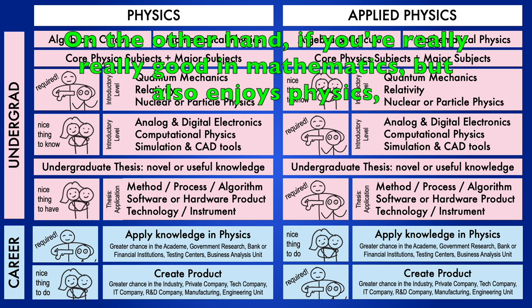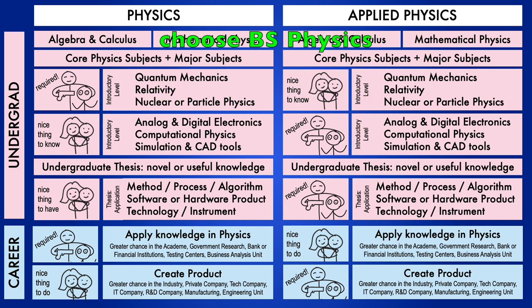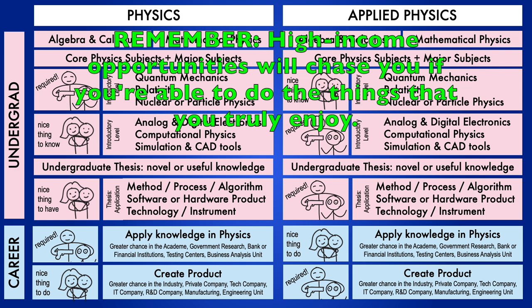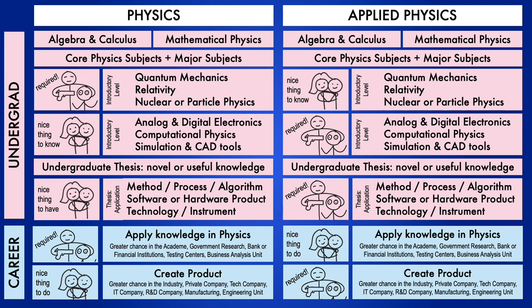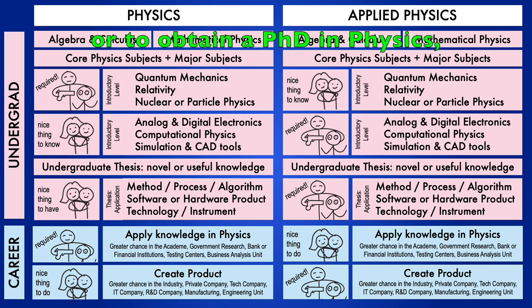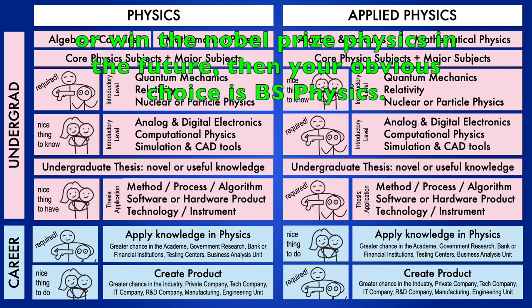On the other hand, if you're really really good in mathematics but also enjoys physics, choose BS Physics. Don't mind whether you'll have a profitable career or not. Remember, high income opportunities will chase you if you are able to do the things that you enjoy. Also, if your goals have something to do with exploring physics further, or to obtain a PhD in Physics, or win the Nobel Prize in Physics in the future, then your obvious choice is BS Physics.